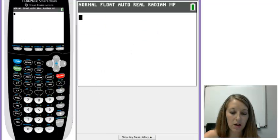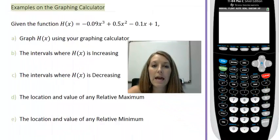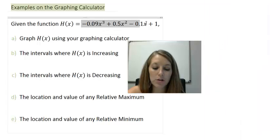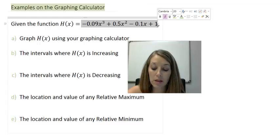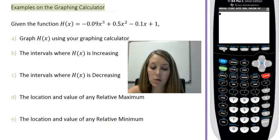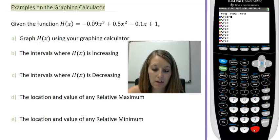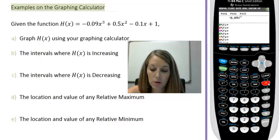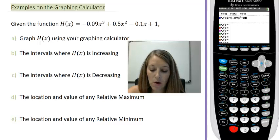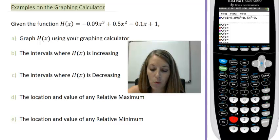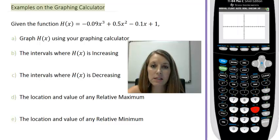So I have my graphing calculator here, and the first thing I'm going to do is plug in my equation — H of x equals this here. We need to go to the y equals and type in exactly what we see: negative 0.09x to the third power, plus 0.5x squared, minus 0.1x, plus 1. We're going to graph this on the standard window by pushing zoom and then the six button.